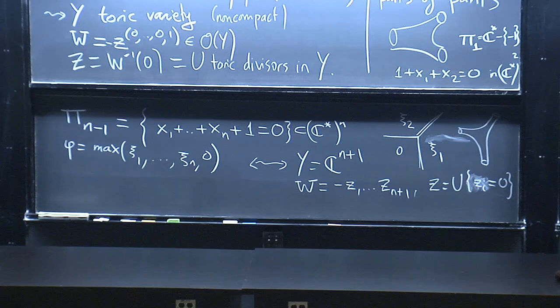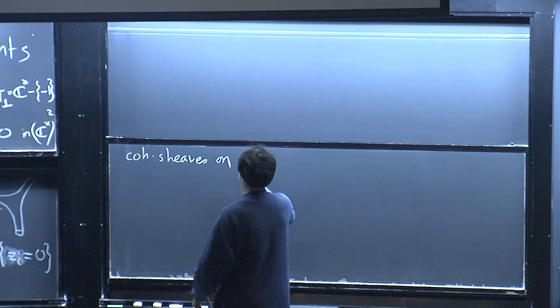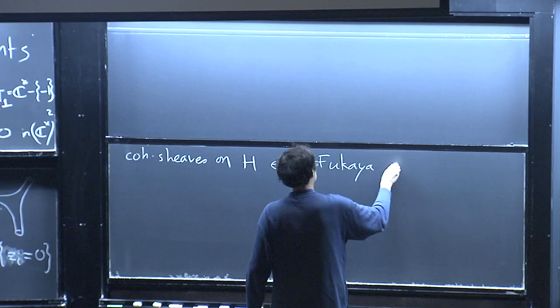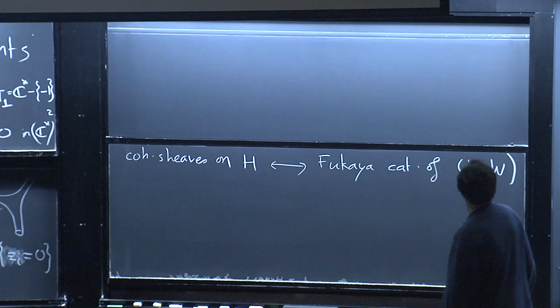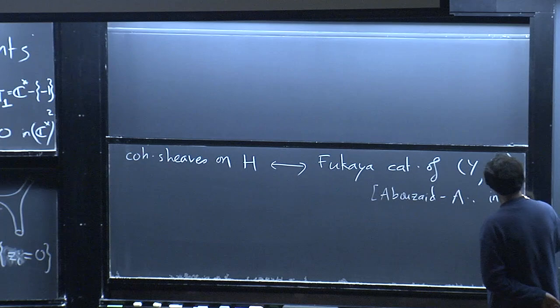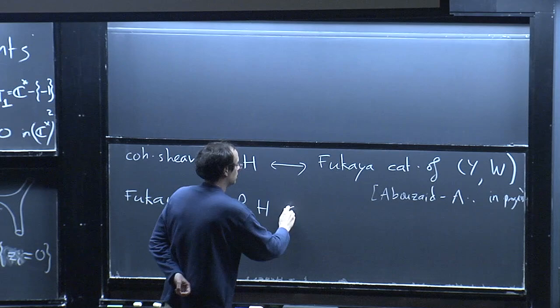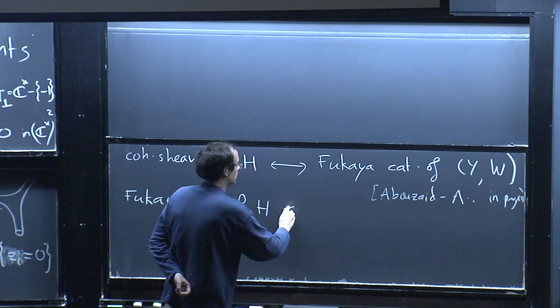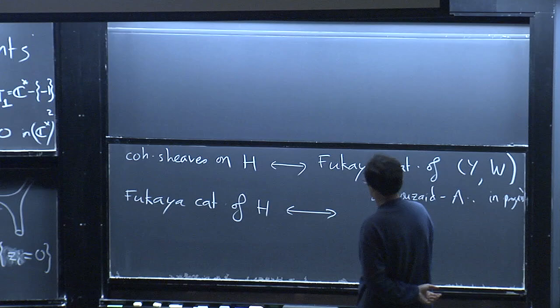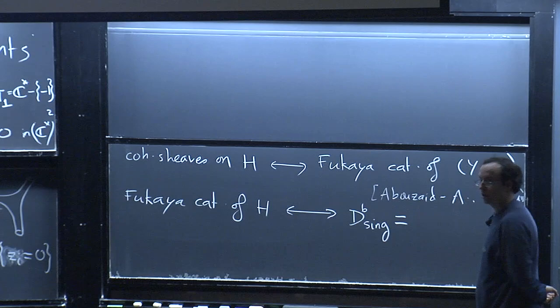The statement of mirror symmetry now comes twofold. One direction is that coherent sheaves on the pair of pants H should correspond to a certain Fukaya category of the pair (Y, w) — this is basically proved in work in progress with Mohamed Abouzaid. Instead, I want to talk about the other direction of mirror symmetry, which relates the Fukaya category of H to the algebraic geometry of (Y, w). The relevant object here is something defined by Orlov called the derived category of singularities.